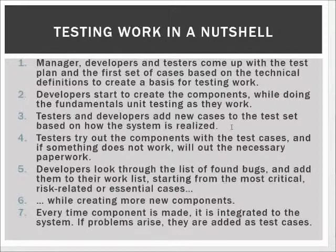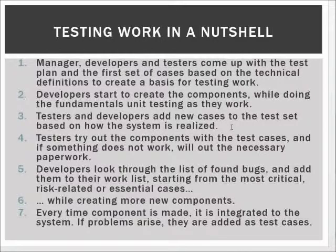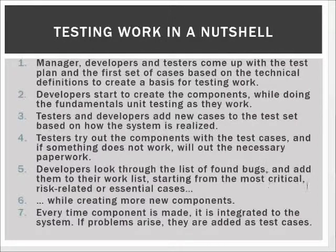When components have passed the unit testing phase, the testers try them out with the test cases, and if something doesn't work, they fill out the necessary paperwork. This gives developers more insight into how the component works and what bugs exist, so the developers add this information to their work list — starting from the most critical, risk-related, or essential cases — and fix those bugs while creating more new components. Every time a new component is made, it is integrated into the system build, and if integration tests fail, the testers add new test cases, provide more bug information, and the developers work through the list. So the cycle works.